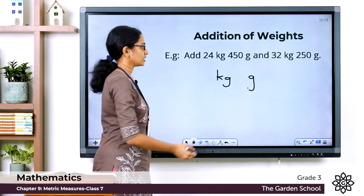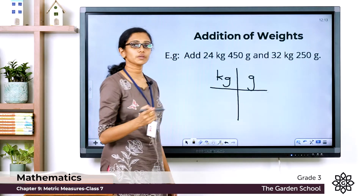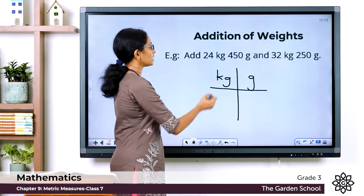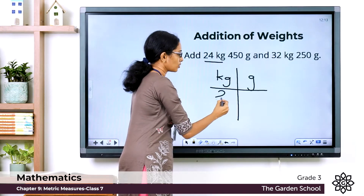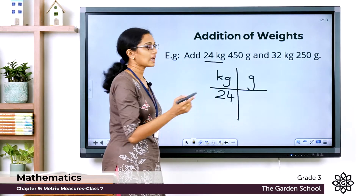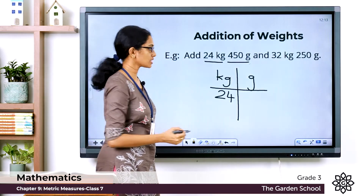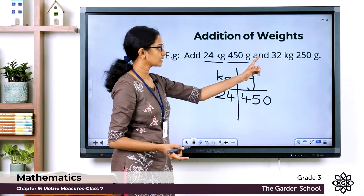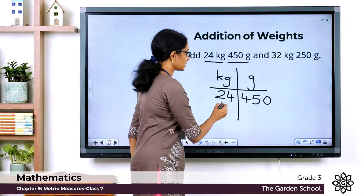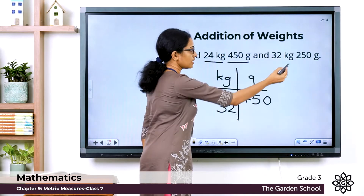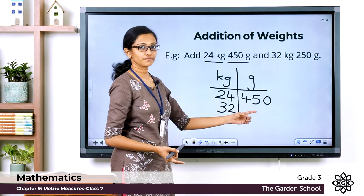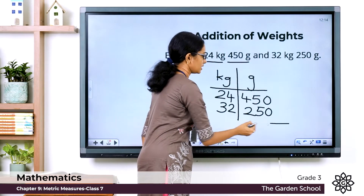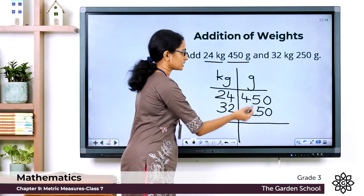Now let's draw the grid. Then we write the given measurements in the correct columns of units. So 24 from 24 kilogram goes in the kilogram column, and 450 from 450 grams will go in the grams column. Let's write it here properly. The next step is to add the grams column first, then proceed to the kilograms column.